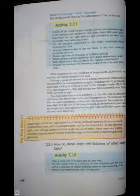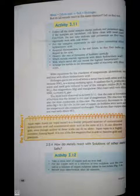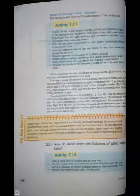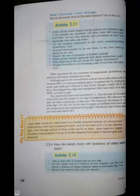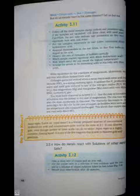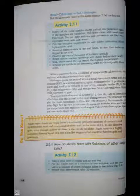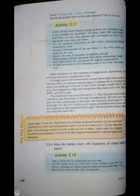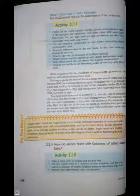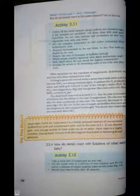Do you know? Aqua regia, Latin for royal water, is a freshly prepared mixture of concentrated hydrochloric acid and concentrated nitric acid in the ratio of 3 to 1. It can dissolve gold, even though neither of these acids can do so alone. Aqua regia is a highly corrosive, fuming liquid. It is one of the few reagents that is able to dissolve gold and platinum.